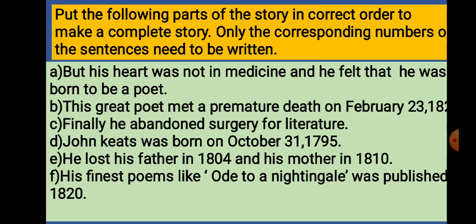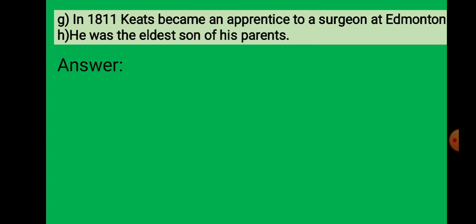Now you see a rearrange. Put the following parts of the story in correct order to make a complete story. A: But his heart was not in medicine and he felt that he was born to write poetry. B: This great poet met a premature death on February 23, 1821. C: Finally, he abandoned surgery for literature. D: John Keats was born on October 31, 1795. E: He lost his father in 1804 and his mother in 1810. F: His finest poems like 'Ode to a Nightingale' were published in 1820. G: In 1811, Keats became an apprentice to a surgeon at Edmonton. H: He was the eldest son of his parents.